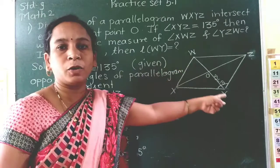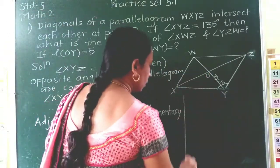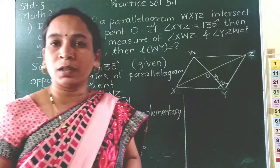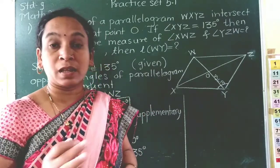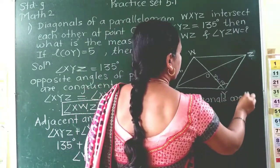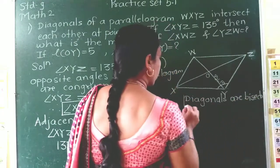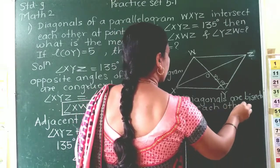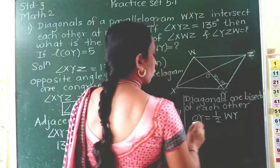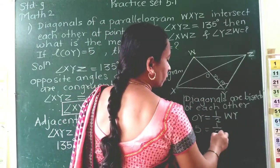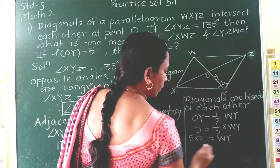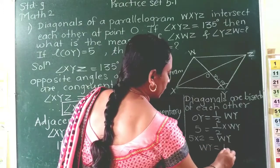Now we will find out diagonal WY. They have given OY as 5 cm. What is the relation of OY with WY? OY is half of WY because we know the property of diagonals: diagonals are bisectors of each other and make equal parts. So OY equals one-half of WY. OY is 5 cm, so 5 equals one-half multiplied by WY, meaning WY equals 5 multiplied by 2, which is 10 cm.